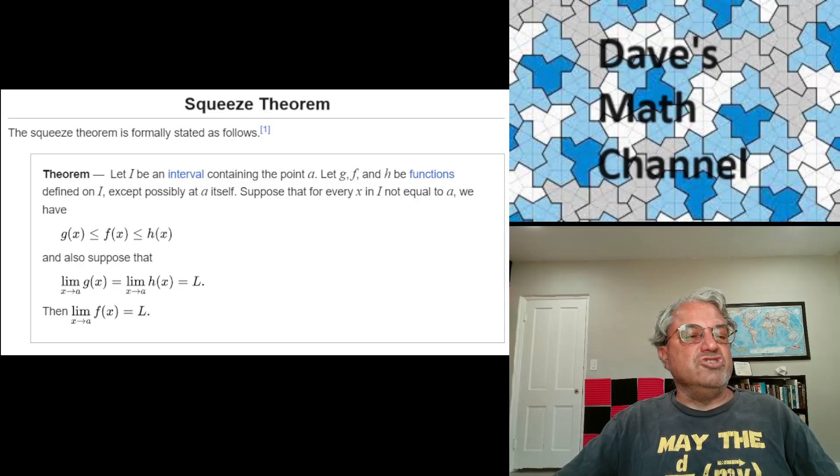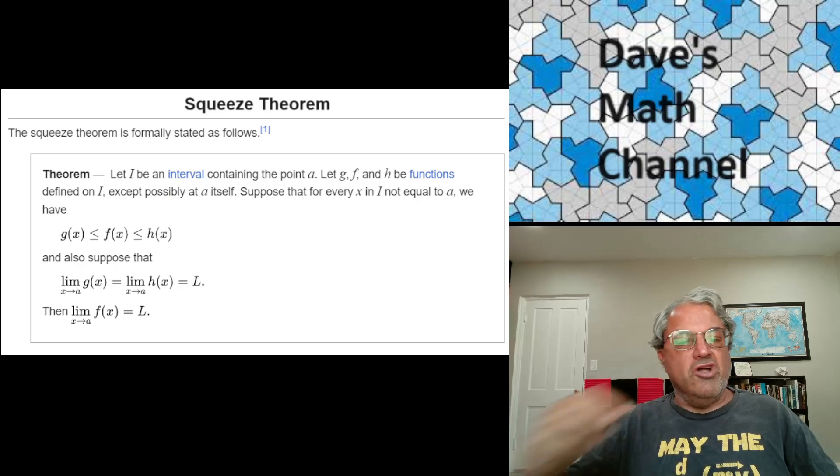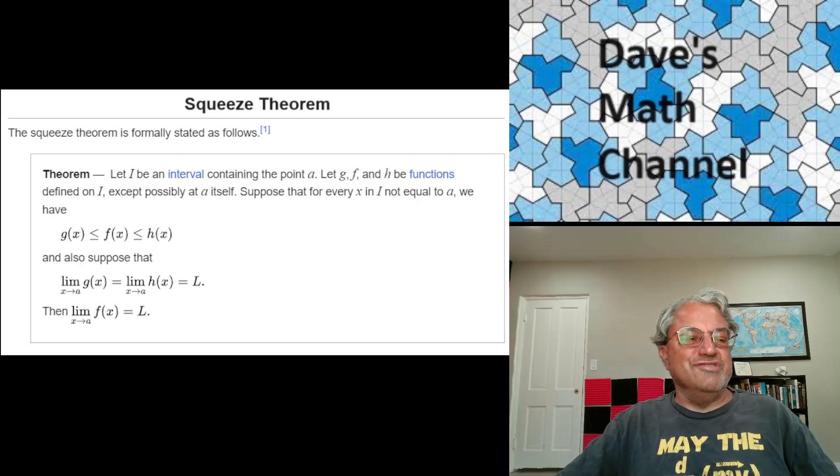The other assumption is that at this particular point A in the interval, we have the limit as x approaches a of g of x is equal to the limit as x approaches a of h of x, and we're calling that limit capital L. And if that's the case, then it also turns out that the limit as x approaches a of f of x is equal to L. That should be pretty easy to see. I think intuitively this is pretty obvious, because we know that f is sandwiched between g and h, and since g and h have the same limit at this point A, then f doesn't have anywhere to go.